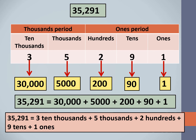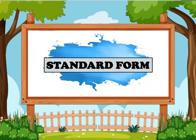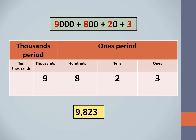We now write 35,291 as the sum of the place values of its digits: 35,291 = 30,000 + 5,000 + 200 + 90 + 1. We can also write the expanded form in words as 3 ten-thousands plus 5 thousands plus 2 hundreds plus 9 tens plus 1 one. The way we normally write the number is called the short form, reduced form, or standard form of a number.